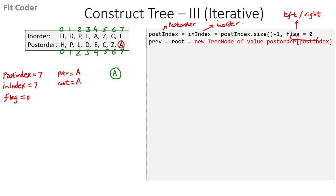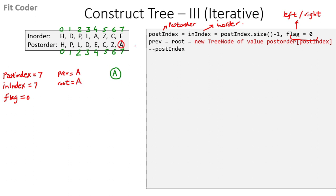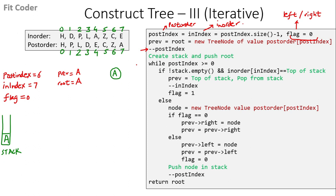In the next step we decrement the postindex, so it is now 6. Then we create a stack and push the root node, so we push A. Then we have a while loop which we run till postindex is greater than or equal to 0. We come inside and check the inorder traversal at inindex, which is pointing to E, because inindex is 7 and the seventh index of the inorder traversal is E. The top of the stack is A.